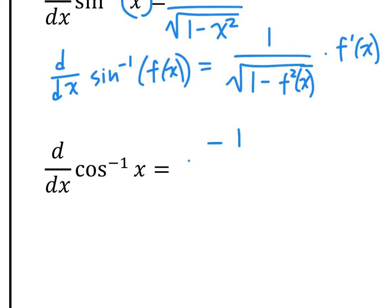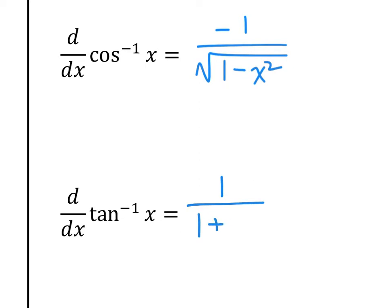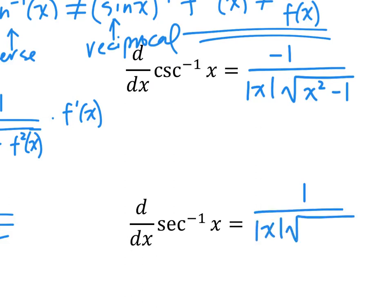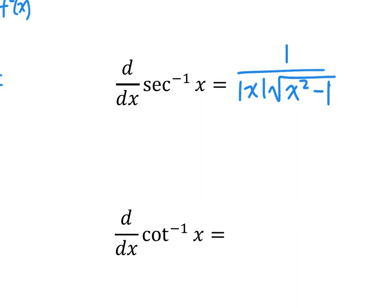Inverse cosine: negative 1 over square root of 1 minus x squared. Again, if the inside changes to any function besides x, remember chain rule applies. Inverse tangent: 1 over 1 plus x squared. Now the harder ones — inverse cosecant: negative 1 over absolute value of x times square root of x squared minus 1. Inverse secant: 1 over absolute value of x times square root of x squared minus 1. And inverse cotangent: negative 1 over 1 plus x squared.